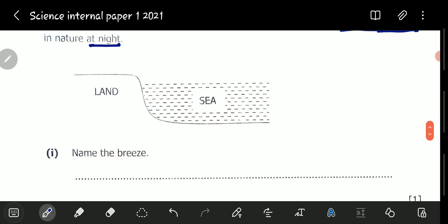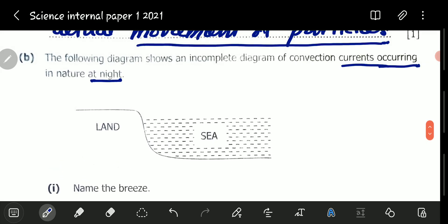They're saying name the breeze. We can't name anything because there's nothing on the diagram. They're just saying the diagram is incomplete. In the very first place, the question is saying incomplete diagram of convection currents. I can only see sea and land. I cannot see any current there.